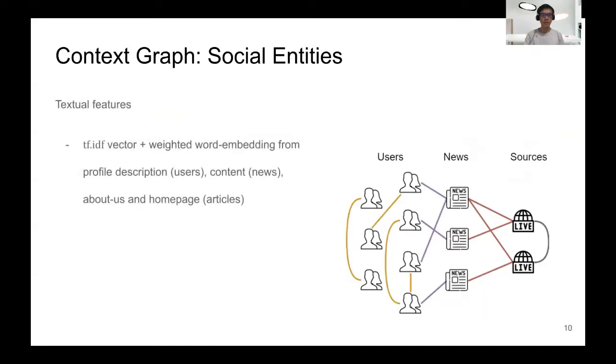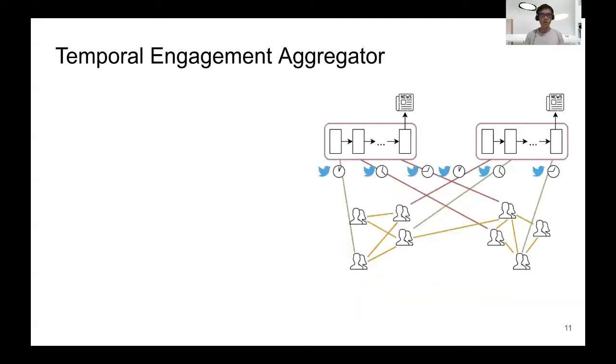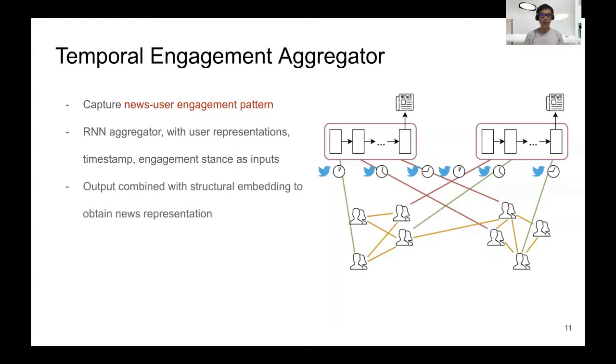We represent social entities by their textual features. More specifically, we use a combination of TF-IDF vectors and weighted word embeddings. If the social entities are users, then we use their profile descriptions. If the social entities are news, then we use the news content. And if they are sources, we use their about us and homepage content. We also consider the importance of how news is engaged on social media. That's why we want to capture the news-user engagement patterns. Since this engagement pattern is temporal, we use recurrent neural networks as our aggregator, with user representation, timestamp, and engagement stance as the inputs. The output of the RNN aggregator is then combined with the structural embeddings to obtain the news representations.